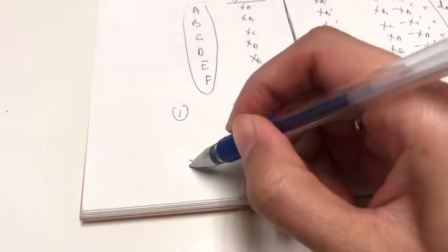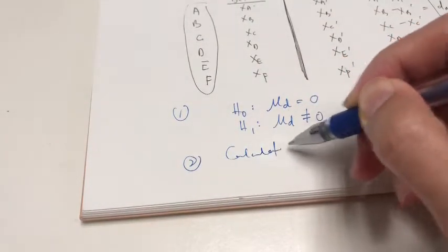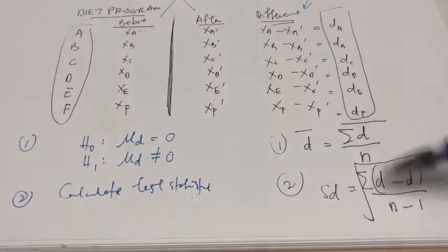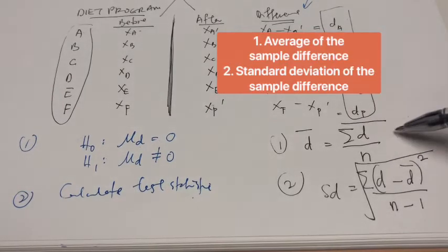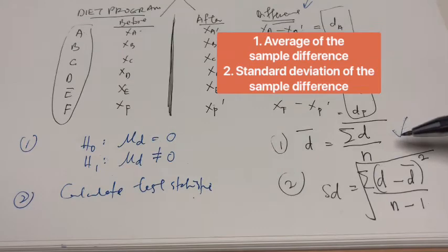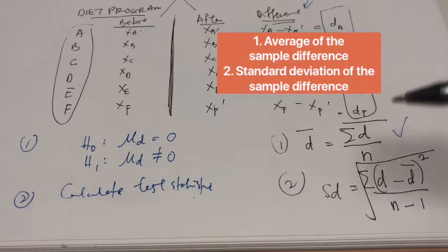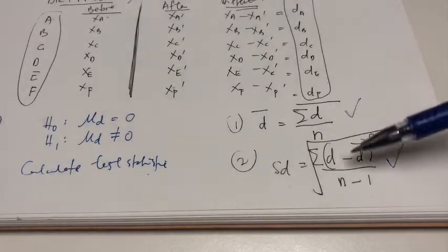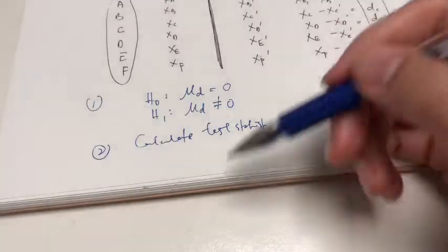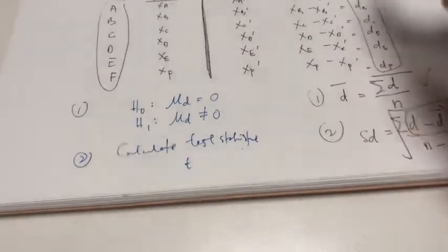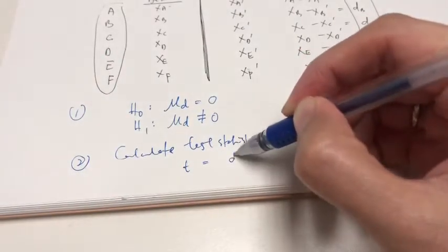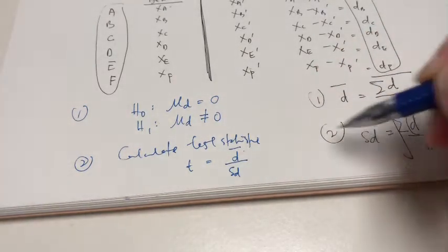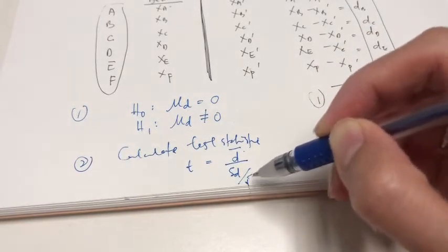Step two is to calculate the test statistic. First, you need to calculate the sample mean difference D-bar. Secondly, you need to calculate the sample standard deviation of the differences, S_D. Once we have these two, we calculate the test statistic using the T distribution: T equals D-bar divided by S_D over the square root of the sample size n.